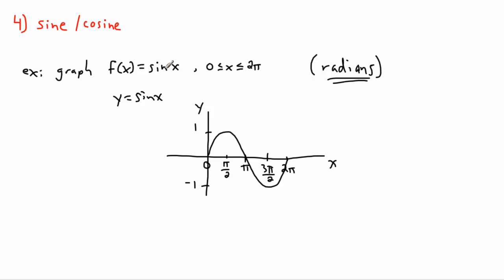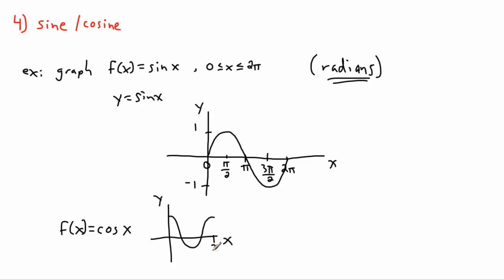For f(x) = cos(x), it does the same wave shape as sine except it starts up high at 1 and goes down, reaching −1 at π and returning to 1 at 2π. Both sine and cosine are actually the same wave shape — they both extend forever in both directions. We call these sinusoidal because they follow a sine wave pattern.